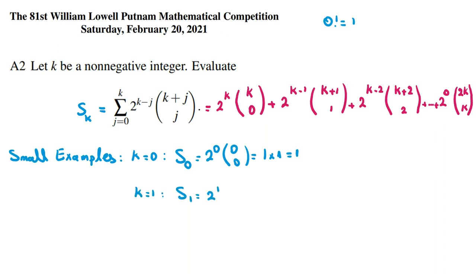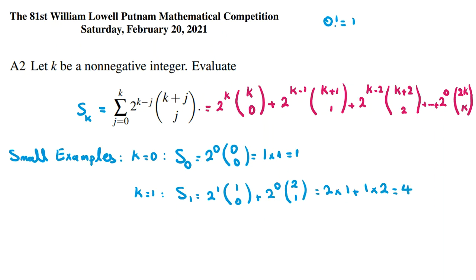Now let's consider k=1. S_1 equals 2^1 times (1 choose 0) plus 2^0 times (2 choose 1). The first part is 2 times 1 equals 2, and the second part is 1 times 2 equals 2, giving S_1 = 4.